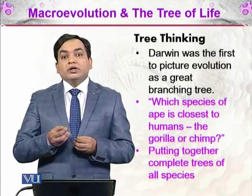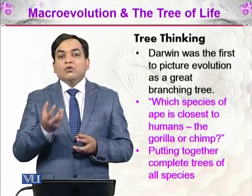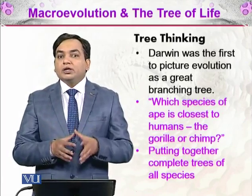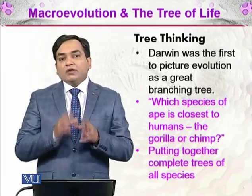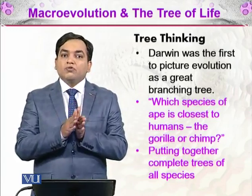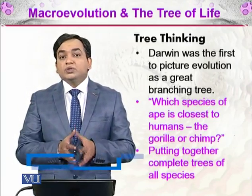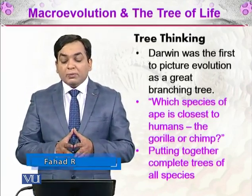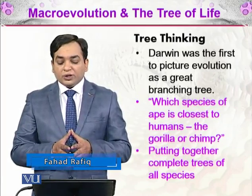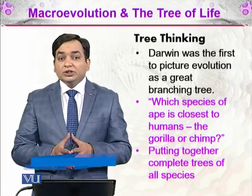Life evolved from one cell and it keeps evolving and making new organisms. Where a new species is formed, there is a sort of branching happening. This idea was first proposed by Darwin — Darwin was the first to picture evolution as a great branching tree.